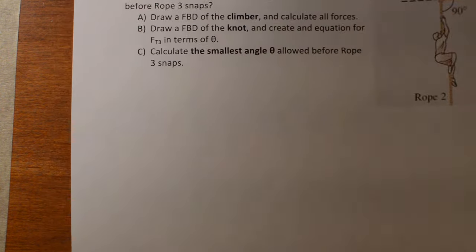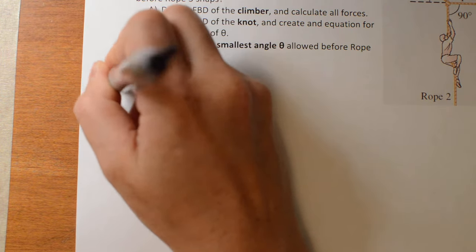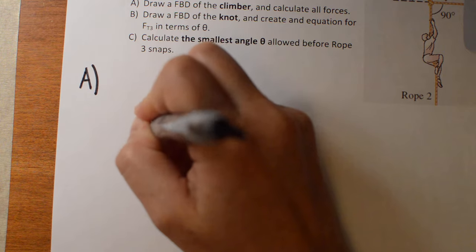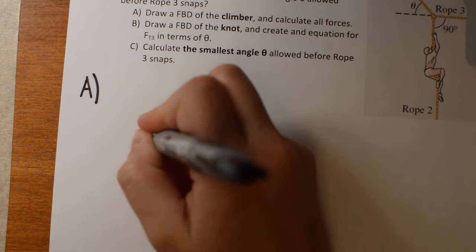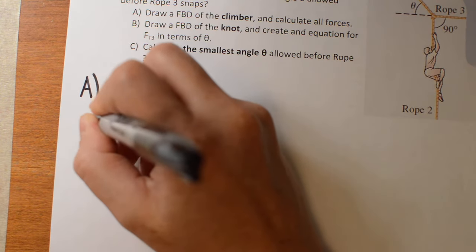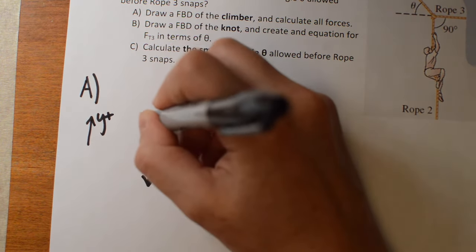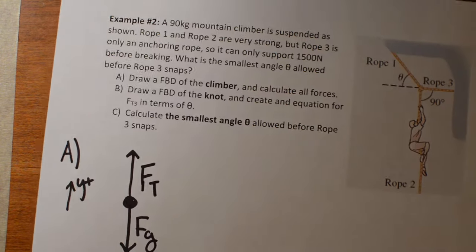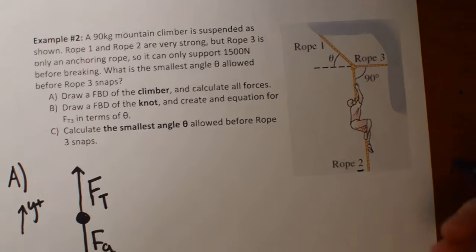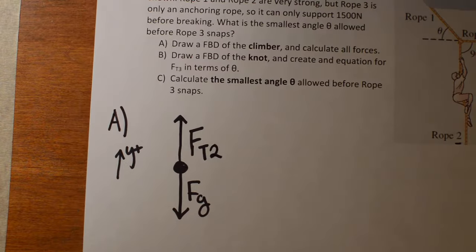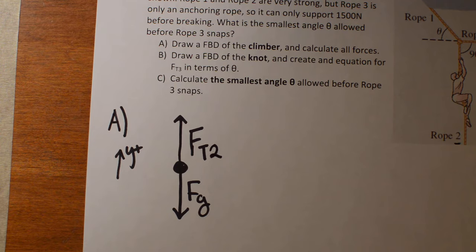Part A starts out pretty straightforward — I'm just looking for a free body diagram of the climber. I'll draw her as a dot. She has two forces: she feels her own force of gravity, and a tension force in the upwards direction. That's FT2, because it's in rope two. There are three different tension forces, so we're going to keep track of them with FT1, FT2, and FT3.